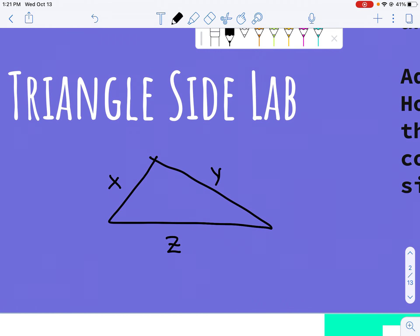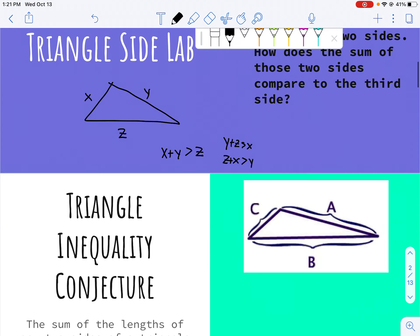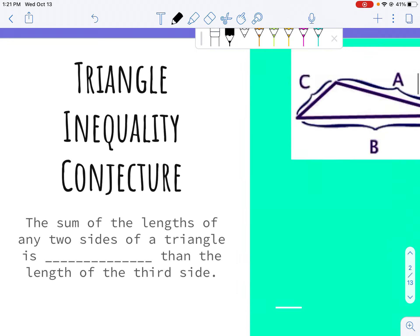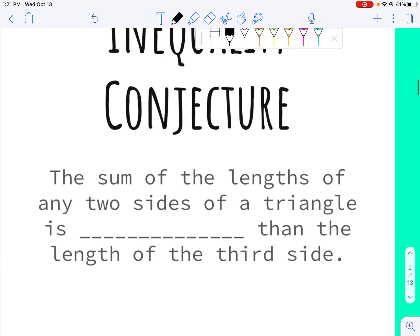And if you've done that, once you have those measurements, you should find that x plus y is always bigger than z, and likewise, y plus z is always bigger than x, and z plus x is always bigger than y. So any two are greater than the third side. That's the triangle inequality conjecture.